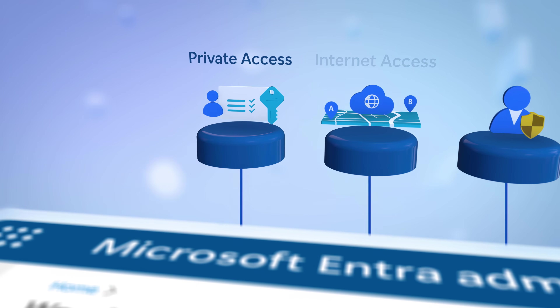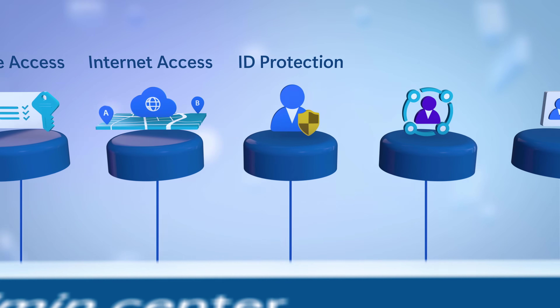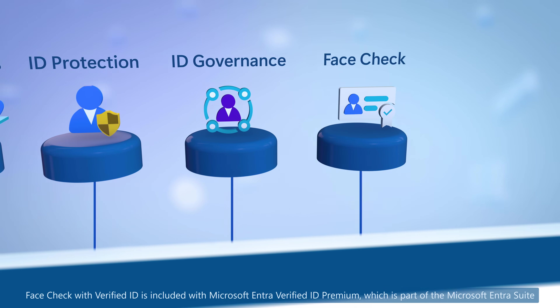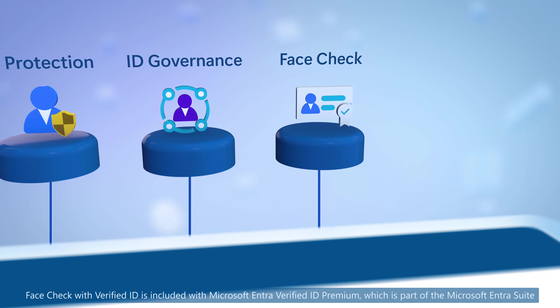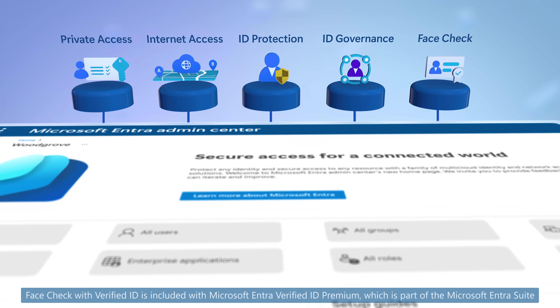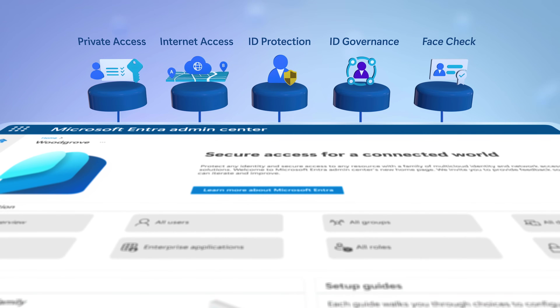Those five capabilities are: Private Access, Internet Access, ID Protection, ID Governance, and Face Check with Verified ID. These work with your existing processes, and I'll first explain how each works and demonstrate them in action.